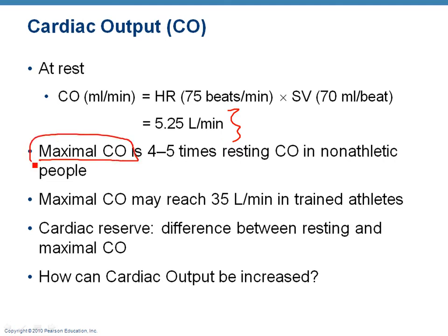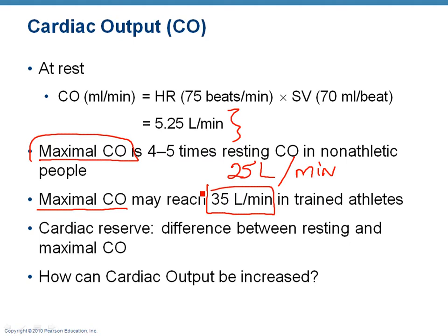Your maximal cardiac output is about 4 to 5 times that volume, so you're getting up to around 20 to 25 liters per minute if you're a non-athletic person. If you're a well-trained athlete — like a marathon runner or triathlete — your maximal cardiac output may approach 35 liters per minute, almost seven times your normal cardiac output. That would mean all of your blood is passing through your heart about seven times per minute.